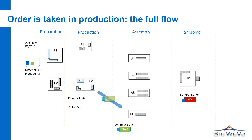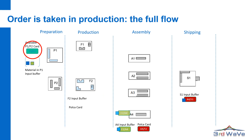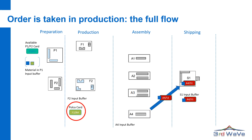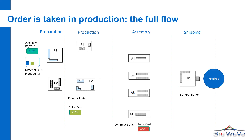Once the job in cell F2 is finished, the P1-F2 Polka card will loop back to cell P1. The returning Polka card indicates availability of capacity at cell F2. This process will be repeated for the next cells until the order is completed and all Polka cards have been looped back.